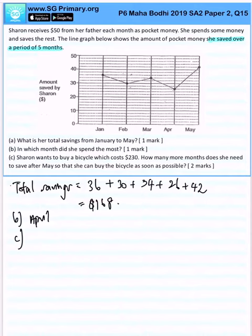That would be minimally two more months, because even if she saves $50 in the next month, she will be unable to purchase the bicycle yet. Therefore, she needs to wait two more months to save $230 in total.